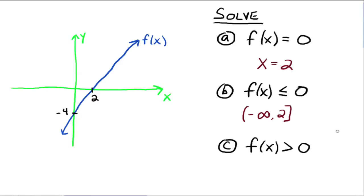The last one: solve where f(x) > 0. We're looking for where the graph of f is above the x-axis, because that's where all the y values are positive. That would be the interval (2, ∞). If you take any number greater than 2, the y value for your function is going to be positive. That's the concept of how to read graphs using the x-intercept method and the intersection of graphs method. We will solve equations and inequalities later with our graphing calculators using these two concepts.